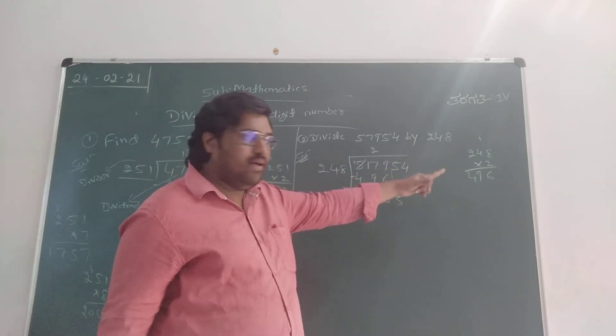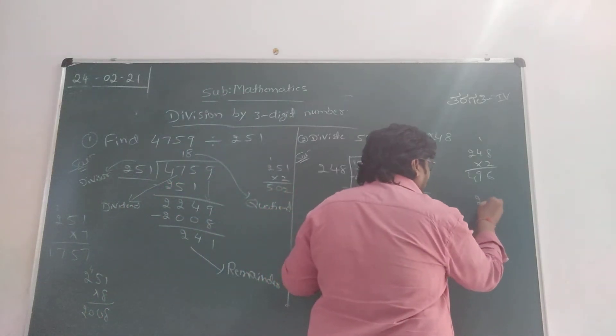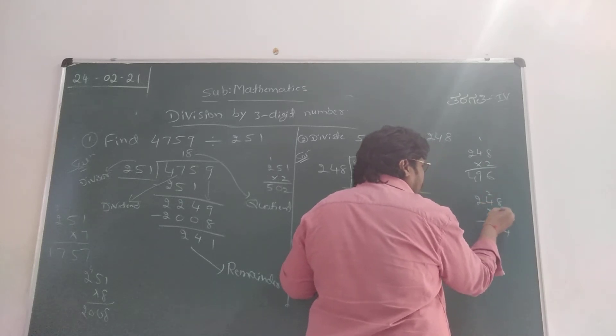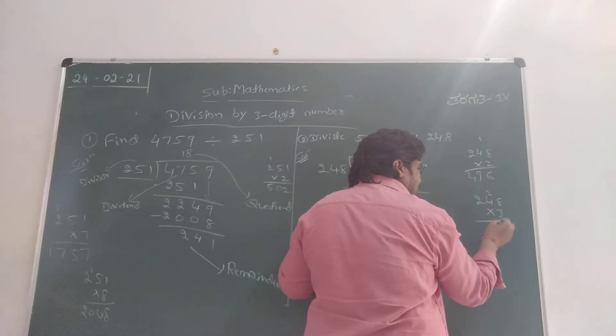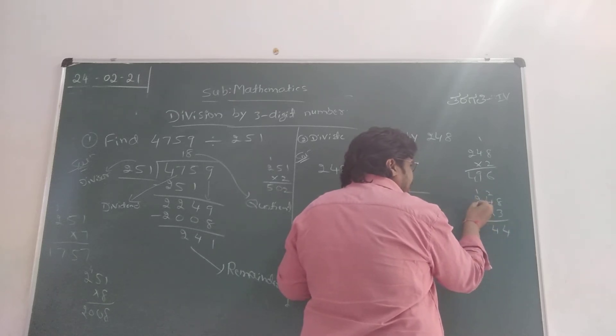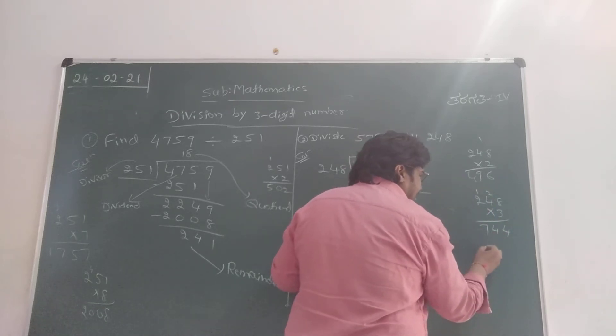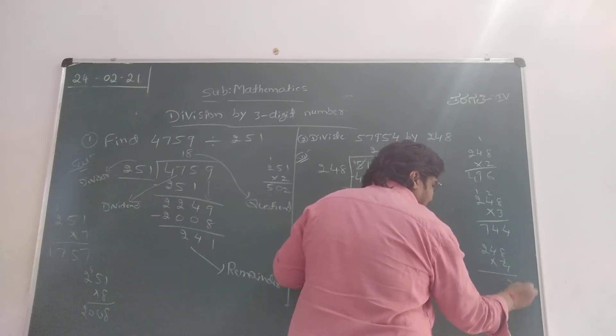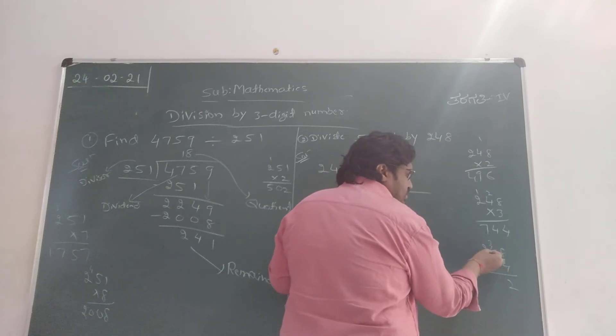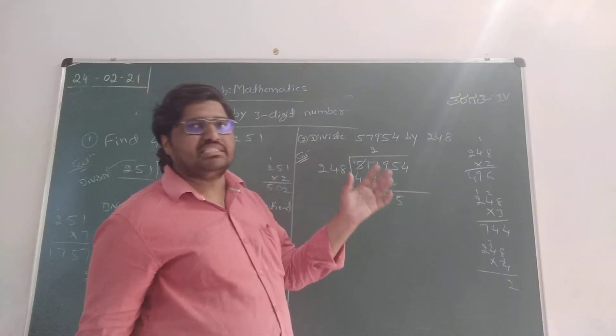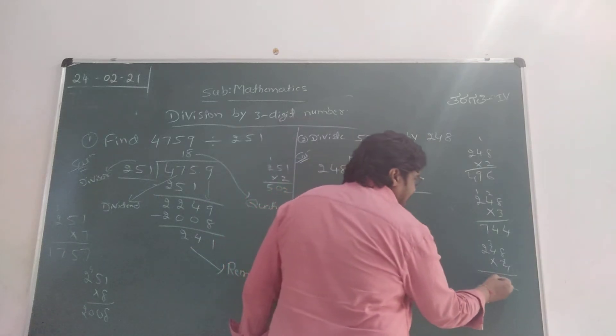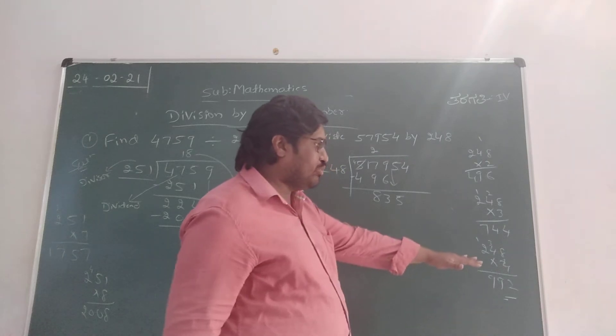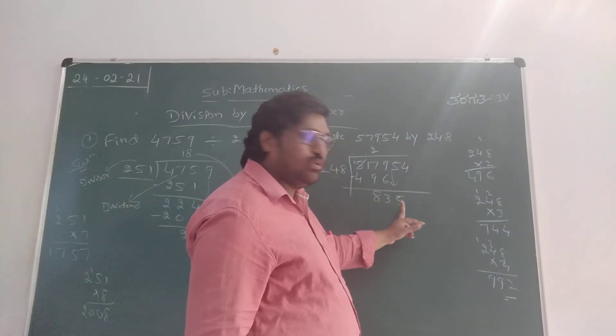Already we know 248 times 2. Next I am going to take 248 times 3: 3 eights are 24, 4 here carry 2, 3 fours are 12, 12 plus 2 is 14, 4 here carry 1, 3 twos are 6, 6 plus 1 is 7. That's 744. Similarly, 248 times 4: 4 eights are 32 carry 3, 4 fours are 16, 16 plus 3 is 19, 9 here carry 1, 4 twos are 8, 8 plus 1 is 9. That's 992.